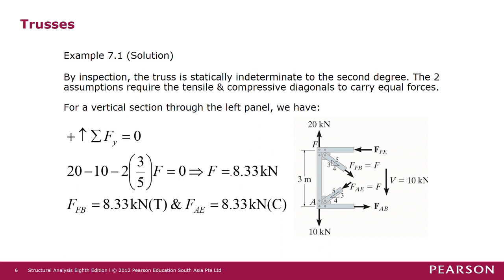We get a positive solution, meaning FFB and FAE were assumed in the correct direction. So FFB is a tension force of 8.33 kN in magnitude, and FAE is compression with a magnitude of 8.33 kN. After that, we want to solve for the other forces FAB and FFE.